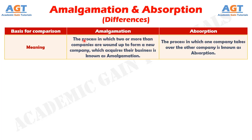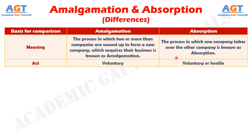The process in which two or more companies are wound up to form a new company, which acquires their business, is known as amalgamation. Whereas, the process in which one company takes over the other company is known as absorption.